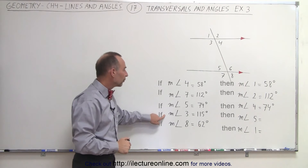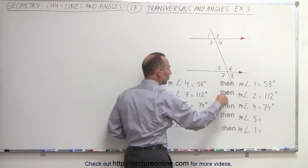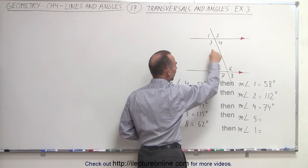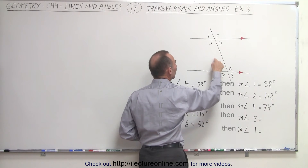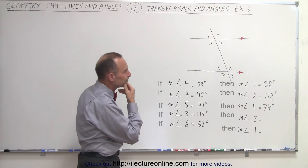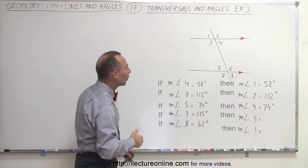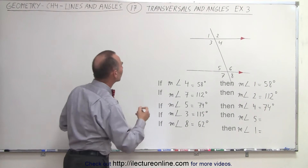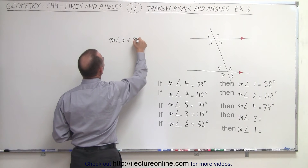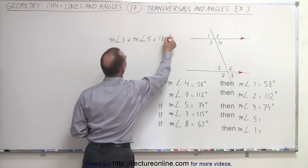Now we have the measure of angle three is 115 degrees — that's this angle right here. What is the measure of angle five? Take a look at three and five. You can see that these are what we call consecutive interior angles. Their measures must add up to 180 degrees. In other words, the measure of angle three plus the measure of angle five must equal 180 degrees.